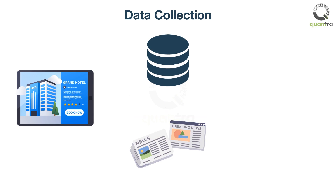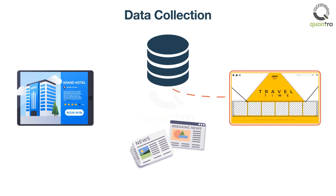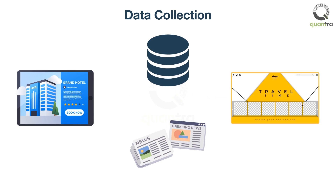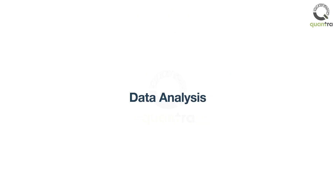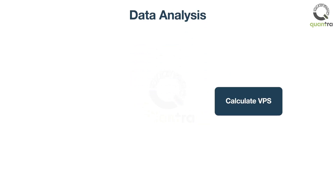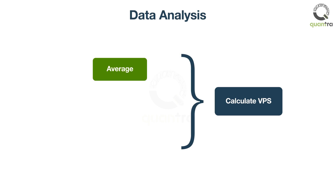The recommended trip duration can be found on popular vacation websites. You might find that you haven't got any data on some locations for a political scenario or recommended trip duration. These fields might need to be updated with a default value. Once you have all the data at hand, you need to come up with a method to calculate VPS.